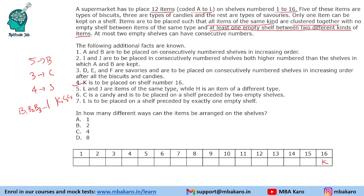A and B are to be placed on consecutively numbered shelves in increasing order, so A comes before B and they will be of the same type. I and J are to be kept on consecutively numbered shelves, both at higher numbers than the shelves on which A and B are kept. Note that for I and J no order is specified, so we can have I then J or J then I — both are possible. But they have to come after A and B.